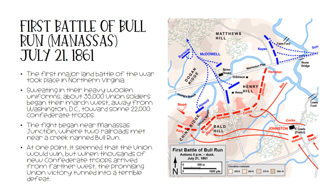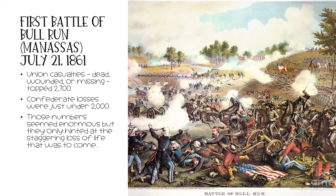The first Battle of Bull Run was the first major land battle of the war and took place in Northern Virginia. About 35,000 Union soldiers began their march west, away from Washington, D.C., toward some 22,000 Confederate troops. The fight began near Manassas Junction, where two railroads met near a creek named Bull Run. At one point it seemed the Union would win, but when thousands of new Confederate troops arrived from farther west, the promising Union victory turned into a terrible defeat. Union casualties topped 2,700 men; Confederate losses were almost as bad at just under 2,000 men. Those numbers seemed enormous, but they only hinted at the staggering loss of life that was to come.